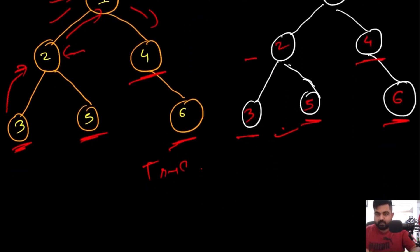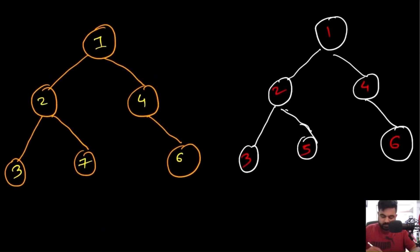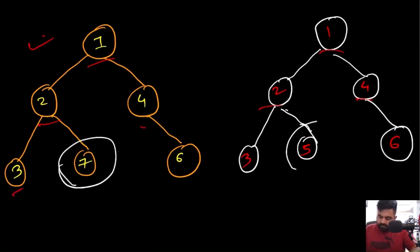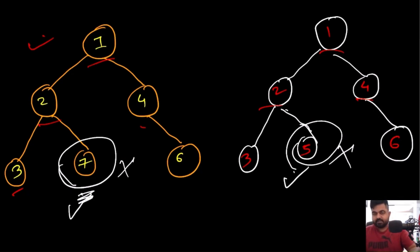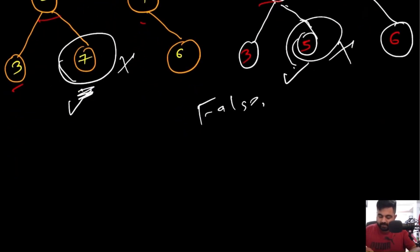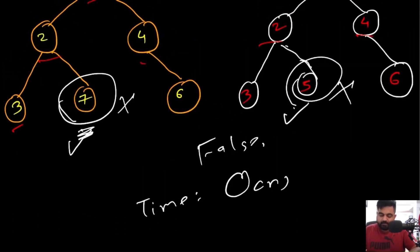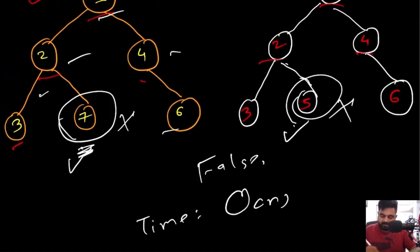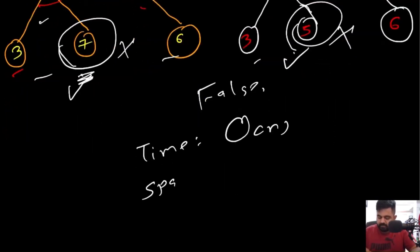In a scenario where trees don't match: all these nodes are the same, but this one node and its counterpart are not the same. The moment we iterate and reach those positions, we can return false immediately. The time complexity is O(n) because we iterate over every node in both trees. The space complexity is O(log n) because this is a binary tree.